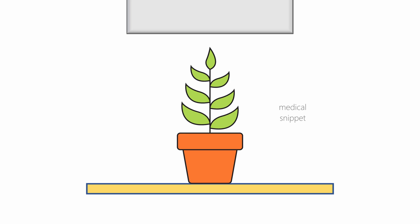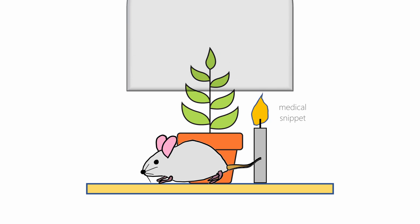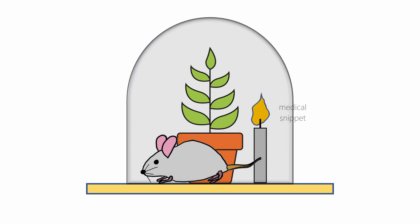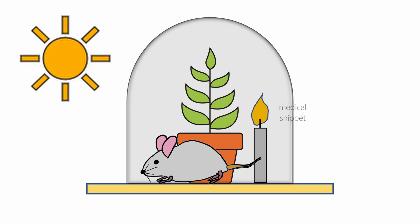But when he put a green plant in the jar and exposed it to sunlight, it would refresh the air inside the jar, making the flame burn longer and the mouse breathe longer.